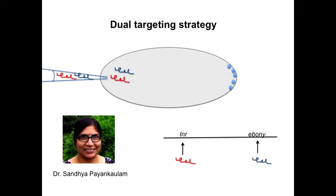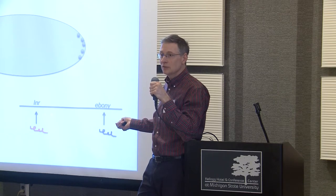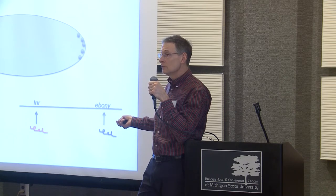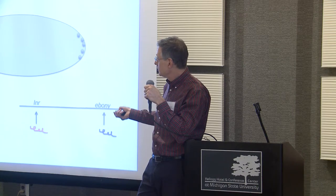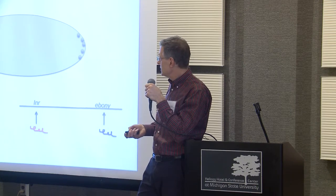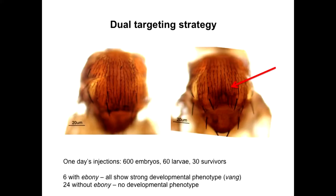Sandhya Payankalam made specific guide RNAs against a visible marker — actually, Revati made the specific guide RNAs and Sandhya injected them. In this case, the visible marker is a gene called ebony, which has a visible cuticular color phenotype. We can engineer that gene and do a knockout at the same time as we're targeting another gene. For instance, we've been working on insulin signaling in the fly, and it's important to manipulate the cis-regulatory elements of the insulin receptor gene, which happen to lie on the third chromosome. Both specific guide RNAs were then injected at the same time. Sandhya found that a certain percentage of offspring showed a trident shape on the notum, typical of an ebony mutation. This provided a visible screening method.